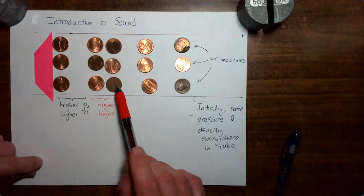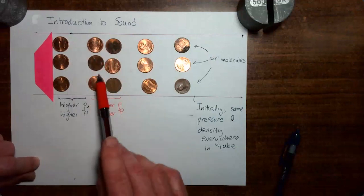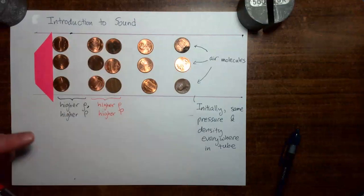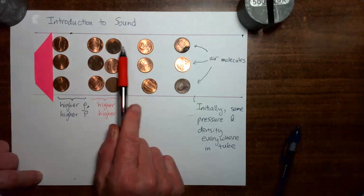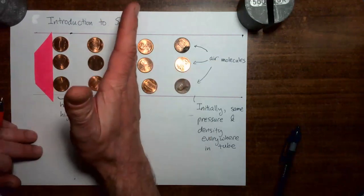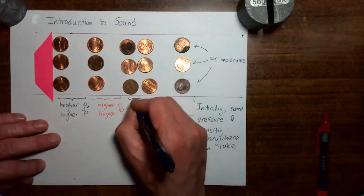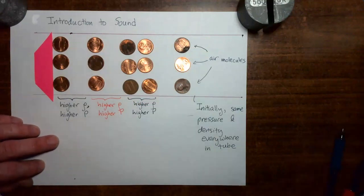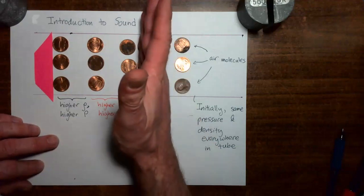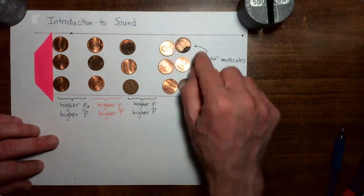Now let's look at the third group of air molecules. The third group of air molecules now experiences higher than normal pressure on its left, but just the normal ambient pressure on its right. So that third group of air molecules is going to get pushed to the right. Now the fourth group of air molecules is going to move over here, so that the region of high density and high pressure is now over in this portion of the tube.